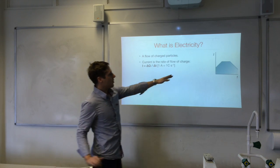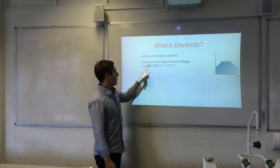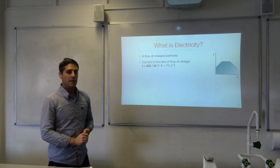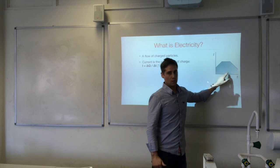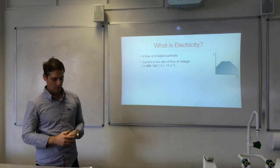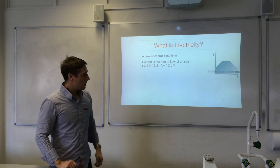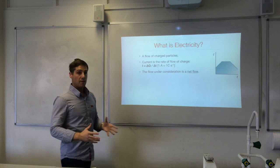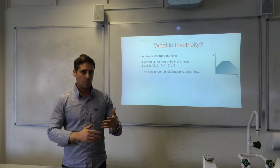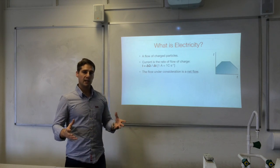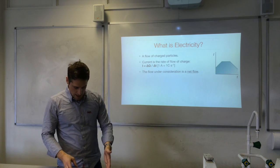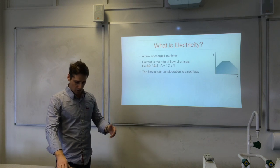If you plot current against time and rearrange this equation to work with that graph, then the area under the graph would give you the charge. So if you plot current against time, you can determine the charge from that graph. The flow we're talking about here — the flow of charge — is a net flow. Charge is often moving around in objects, but we wouldn't say there's a current because there's no net flow.